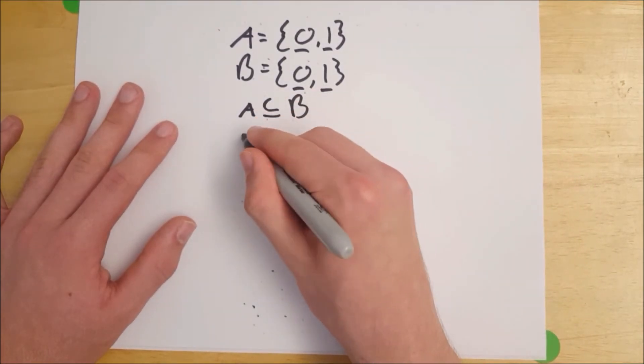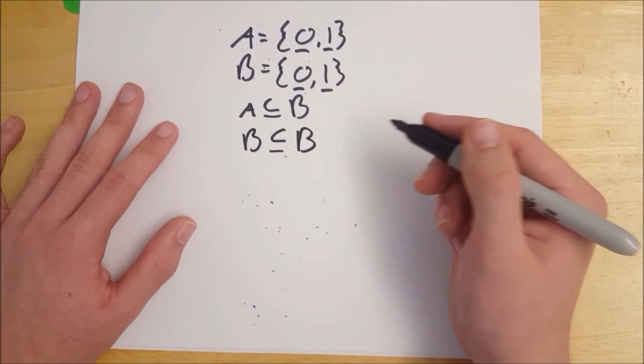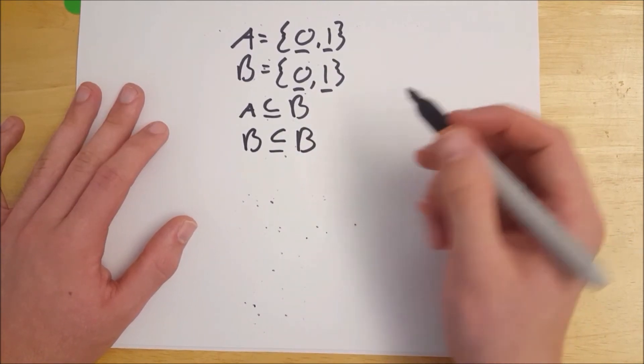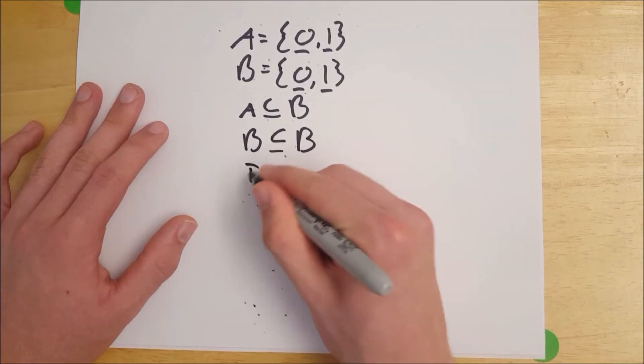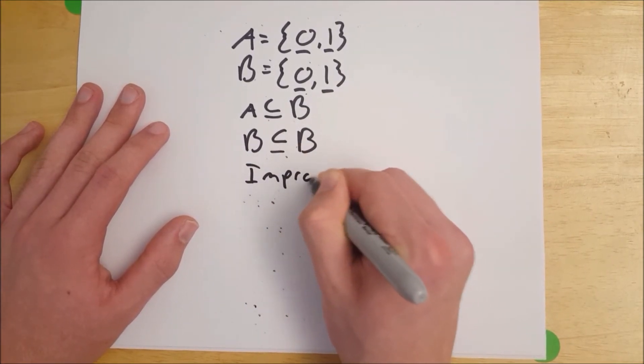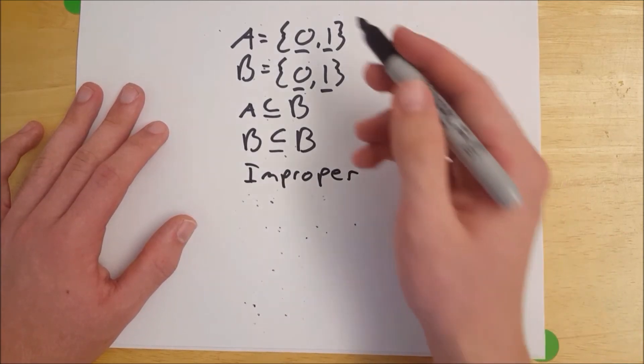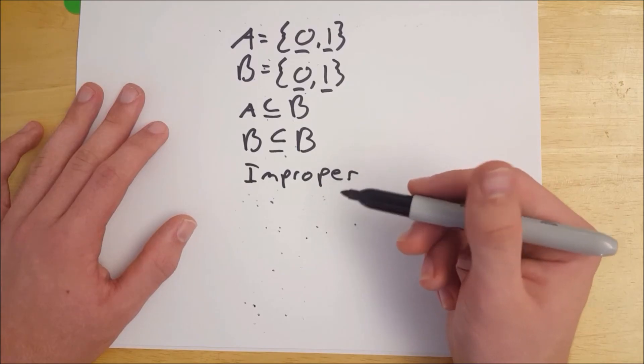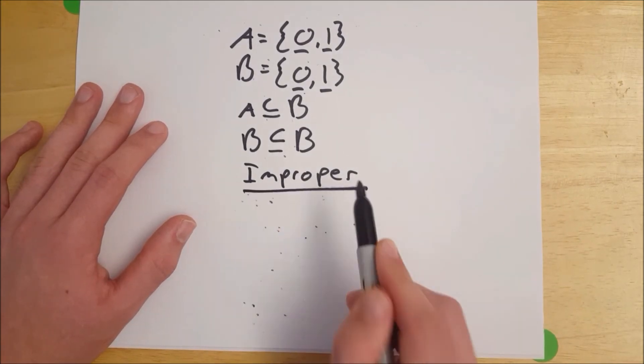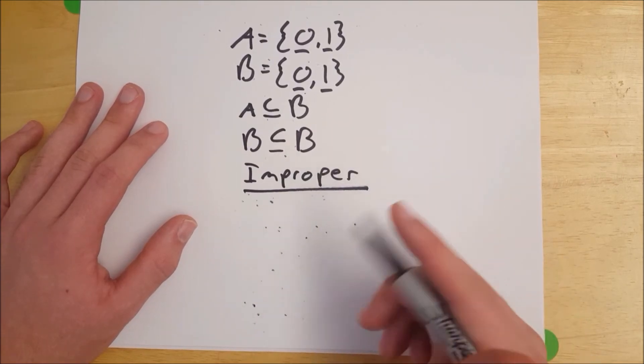So in the same way, you could say that B is a subset of B. Every set is a subset of itself. It's an improper subset of itself, but it is a subset nonetheless because to be a subset, you just have to have all of your elements have to be in another set.